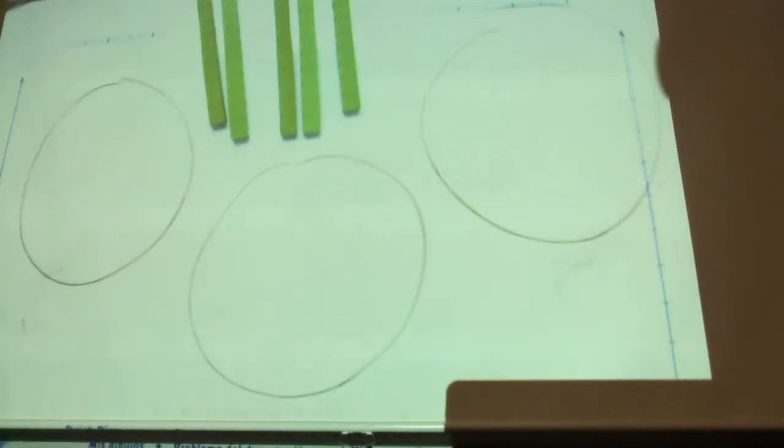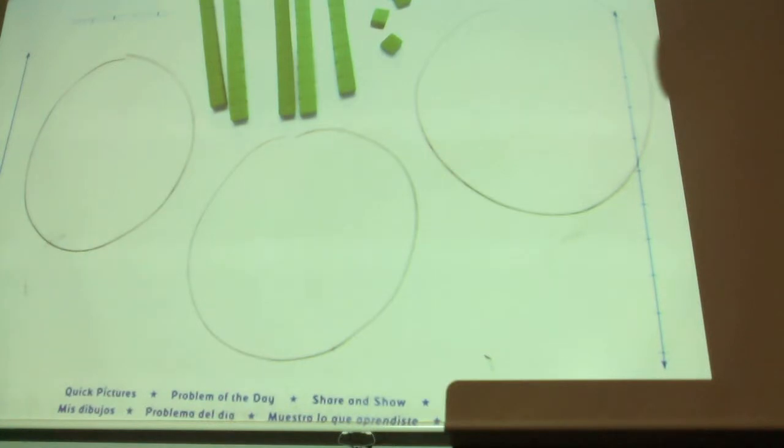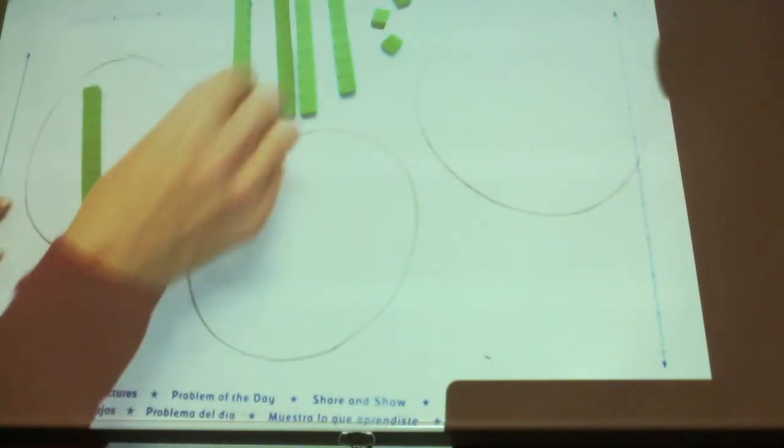How many ones should we have? Four. Go ahead and grab four ones and then pass your bag down. Fifty-four looks like this in base ten blocks. On our paper it says share the tens equally. So I'm going to give each group a ten.